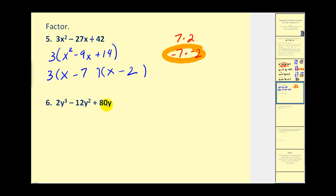The greatest common factor of this expression is 2y. If we factor out 2y, we're left with y² - 6y + 40, where the inner quadratic has a leading coefficient of 1. So we can apply the same technique. So the question becomes, what are the factors of positive 40 that add to negative 6? Let's list all the factors of positive 40.